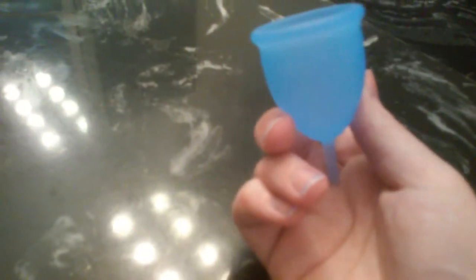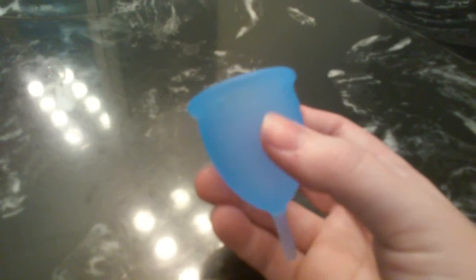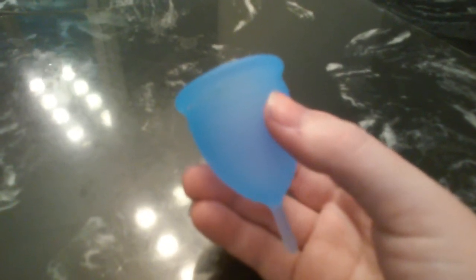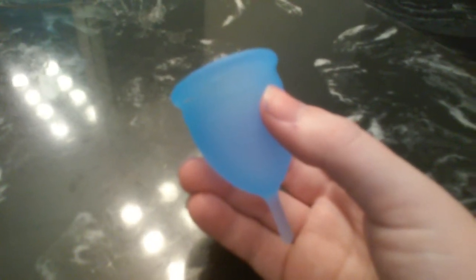This cup comes in two colors. It comes in this ocean blue color and also it comes in a color I believe called Himalayan Pink and that's as you'd imagine is a pink color similar to the pink Lena Cup. This cup retails for $27 and you can purchase it on the Salt Cup's website which I will be listing down below.